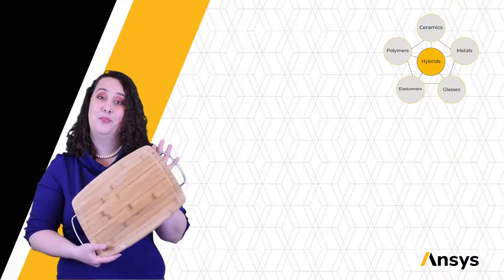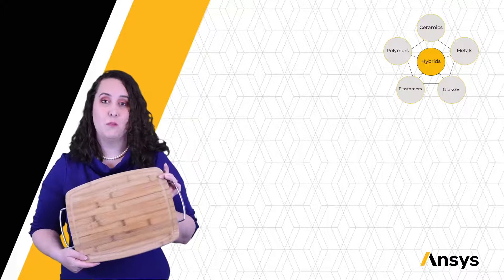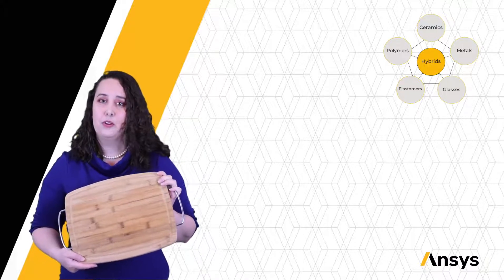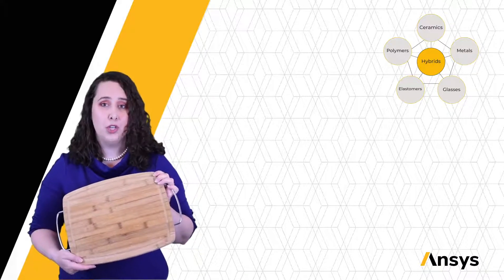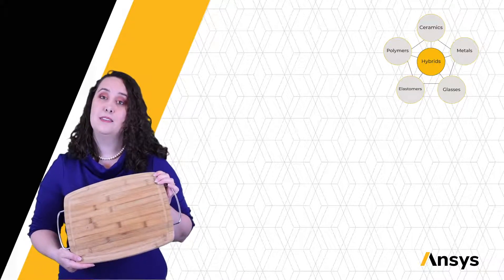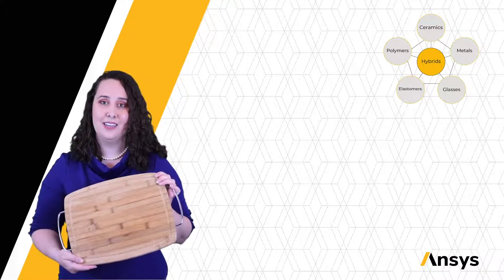Wood. For example, this wooden cutting board I have here. Many natural materials are composites, if we consider the definition. For example, wood is a composite of cellulose and lignin.